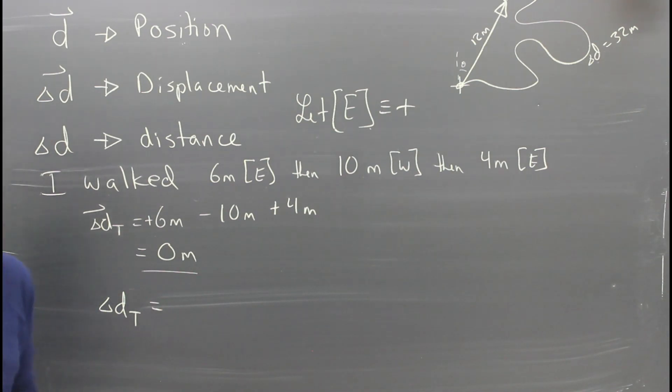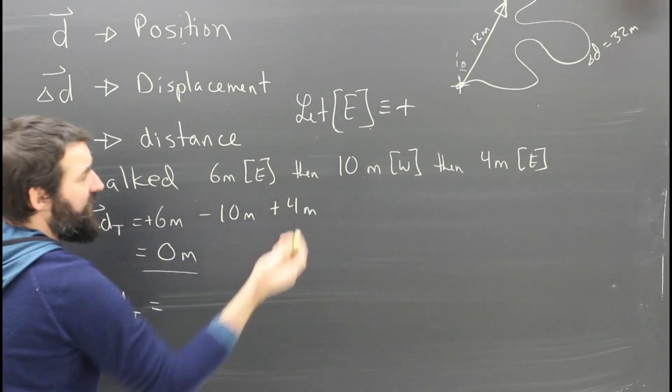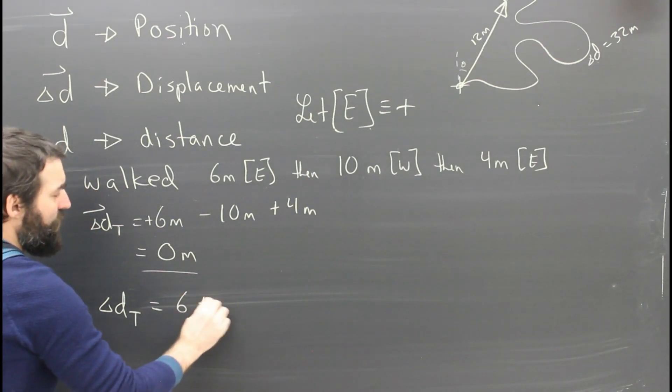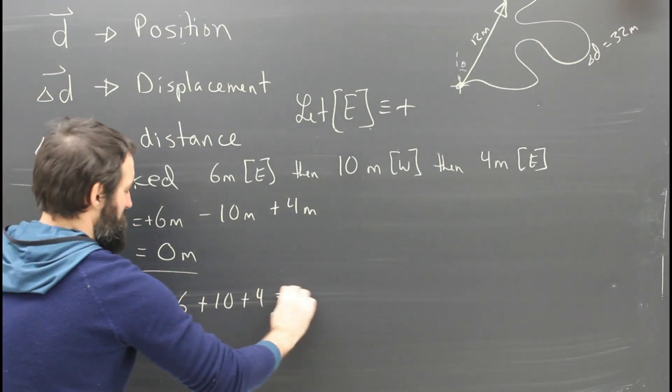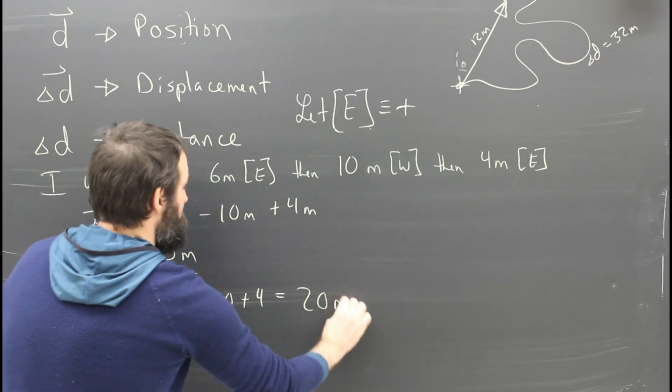What's my total distance? How far did I walk? I just add them up without any attention to the direction. Six plus 10 plus four equals 20 meters.